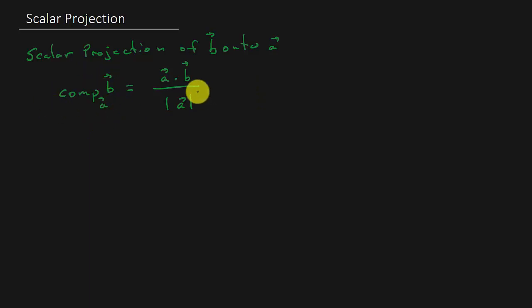The scalar projection of B onto A is equal to the dot product of A and B divided by the magnitude of A. All right, so just to give you an idea of what we're finding here.